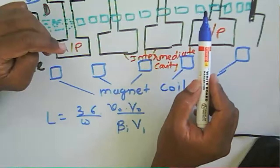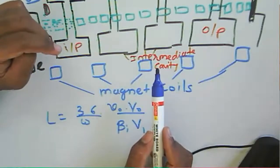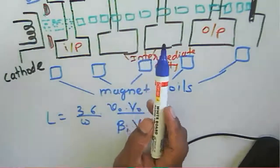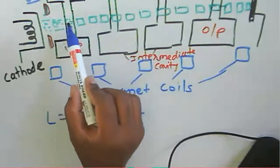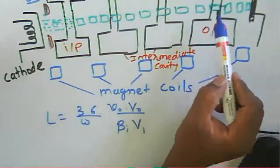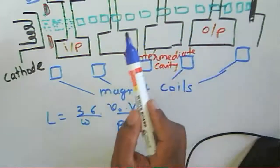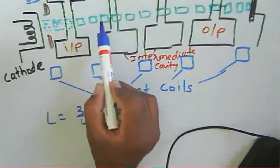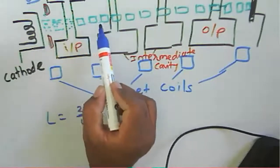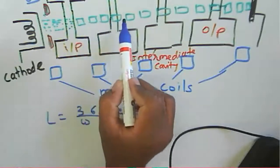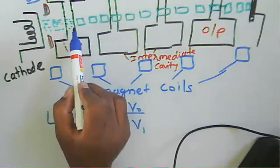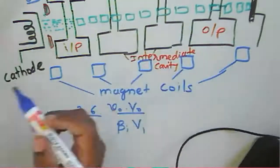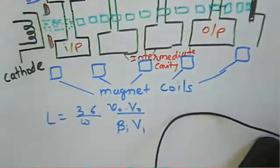Because of the intermediate cavities, signal strength is increased. As we move from the buncher cavity toward the catcher cavity, the optimum length — also called the drift space — gradually decreases. For example, the distance between the first cavity and the next is 10, then 9, then 8, and so on. This gradually decreasing cavity distance helps achieve higher power gain.